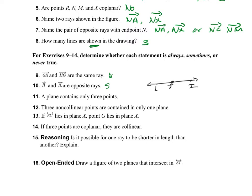A plane consists only of three points — is this always, sometimes, or never? This is never, because a plane consists of infinitely many points, not just three.